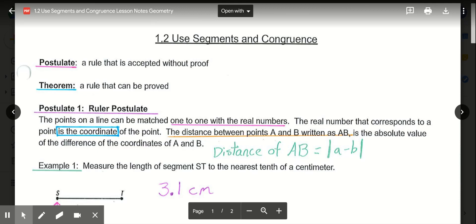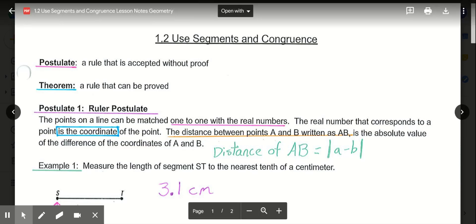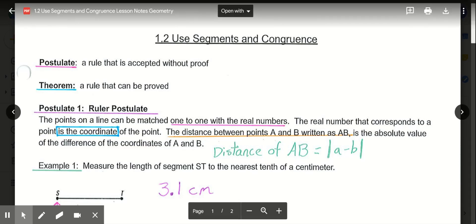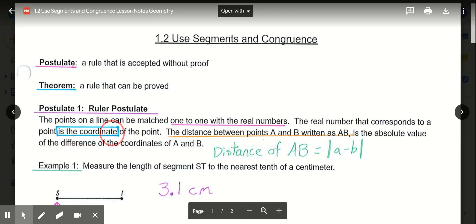But for today, we are starting simple, and we are going to look at postulate number one, the ruler postulate. So obviously, we are familiar with a ruler, typically 12 inches long or a foot. The ruler postulate states that the points on a line can be matched one to one with the real numbers. The real numbers that correspond to a point is the coordinate of the point.